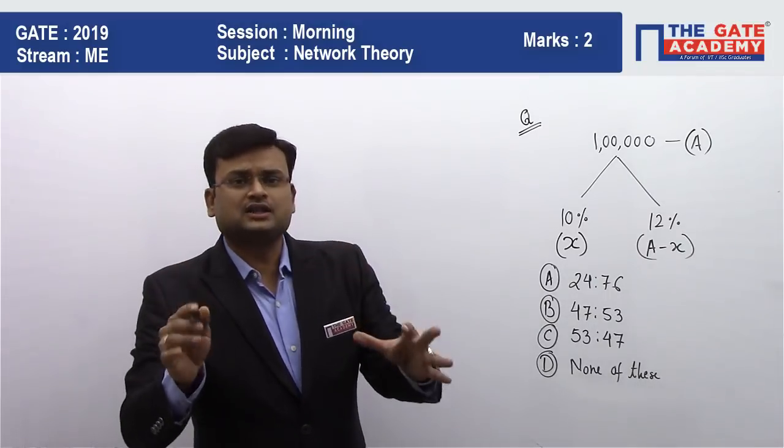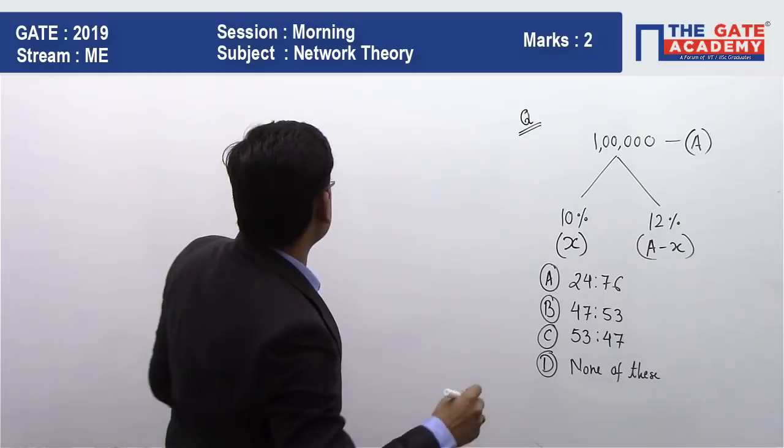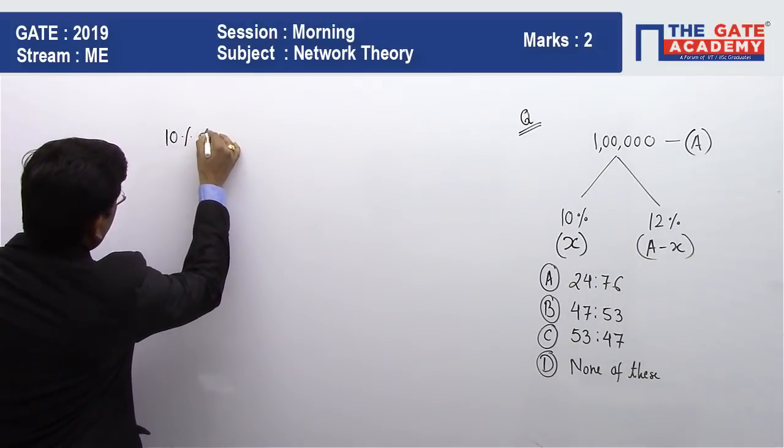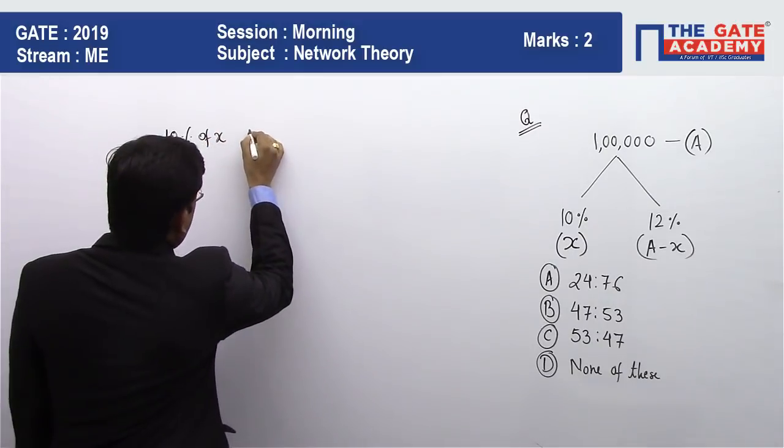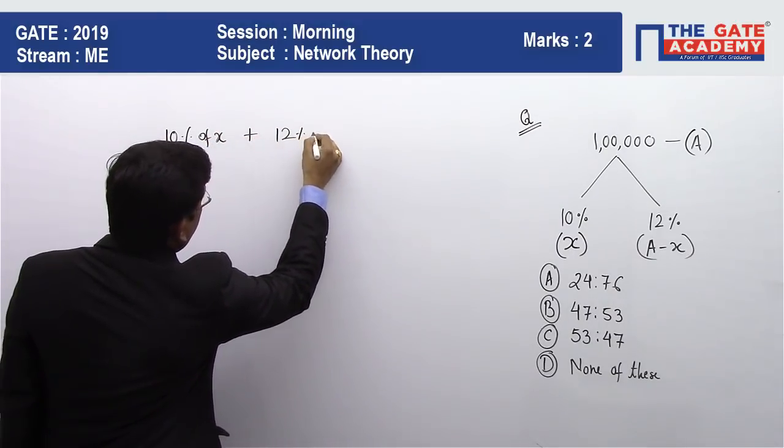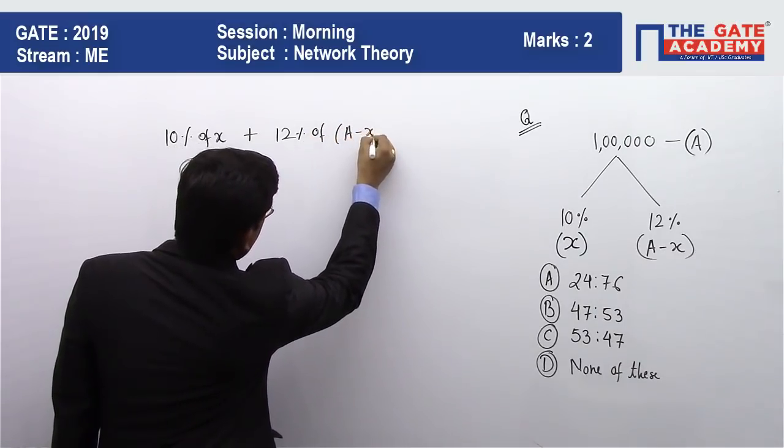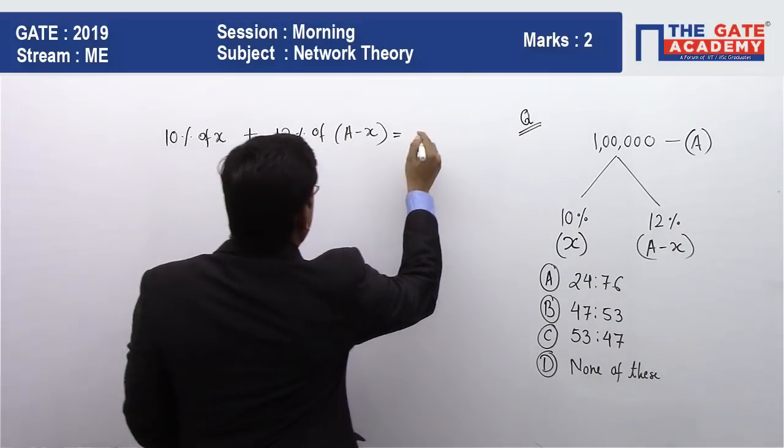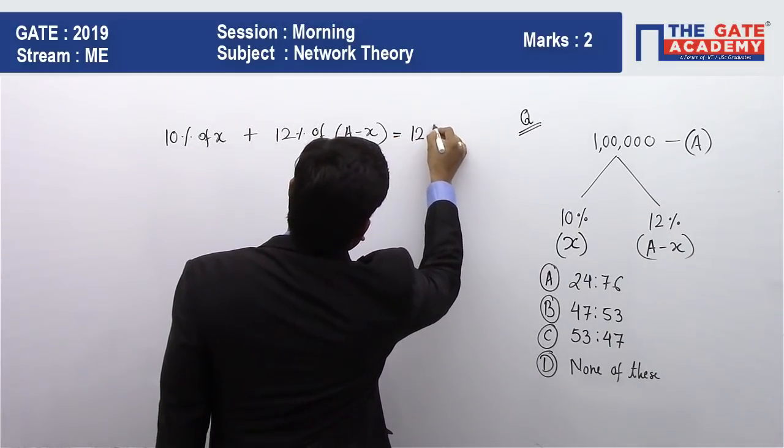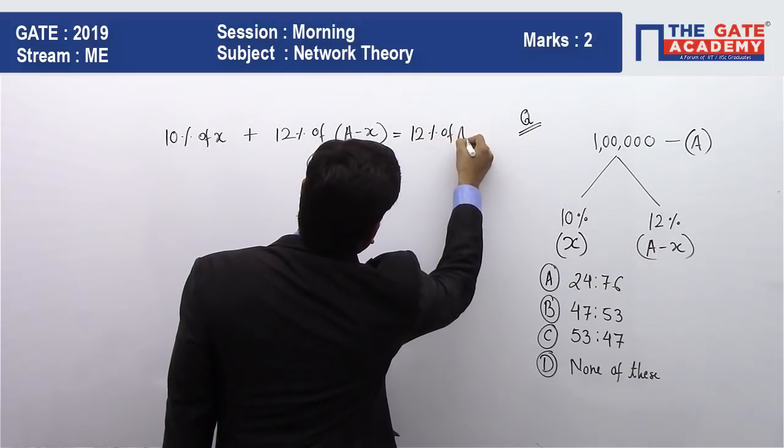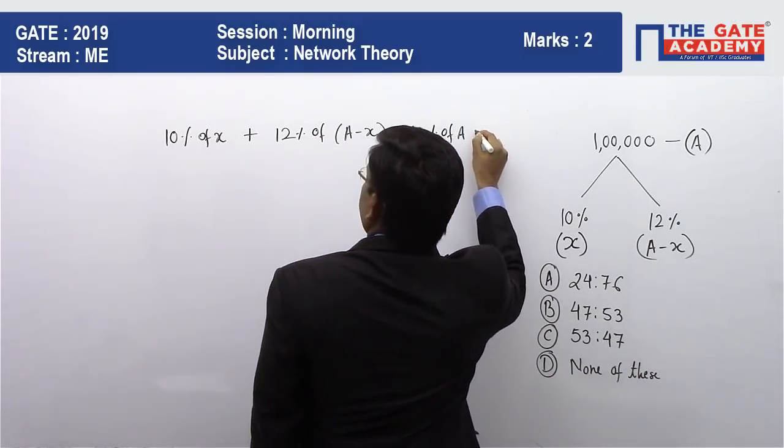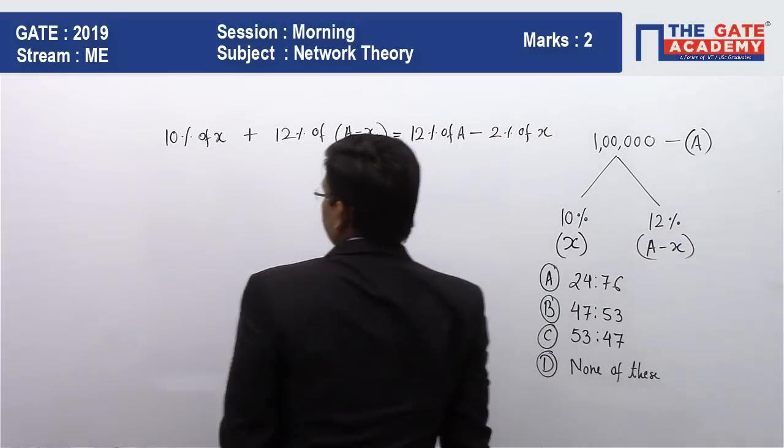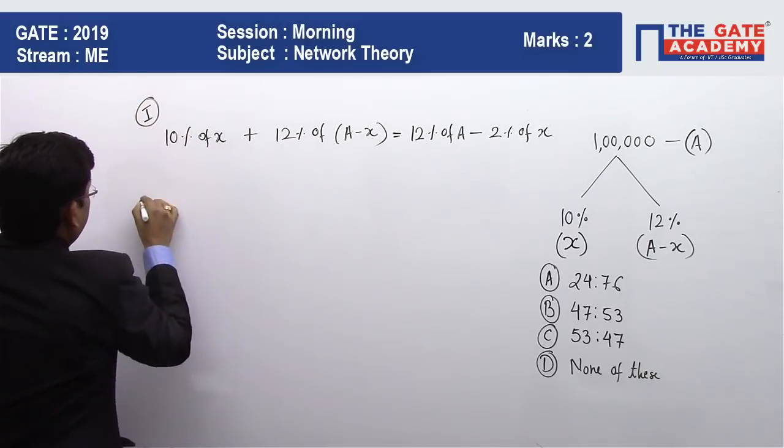To solve this problem, let's start with case 1. Case 1 says that my total earning is 10% of x plus 12% of (A minus x). If we simplify this, we get 12% of A minus 2% of x. This is case 1.